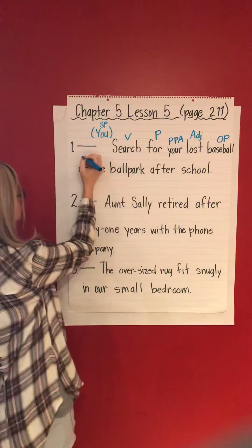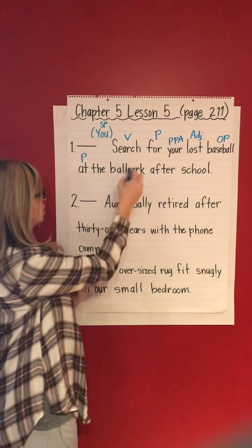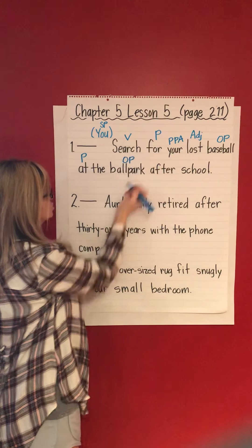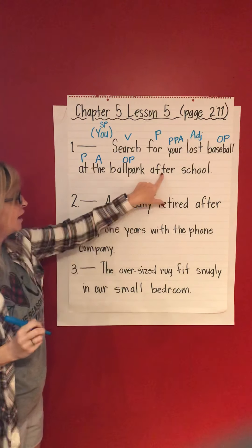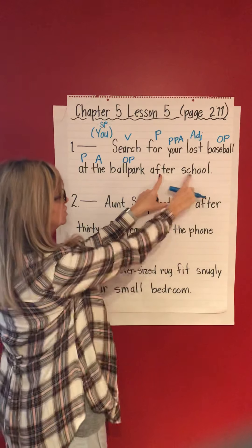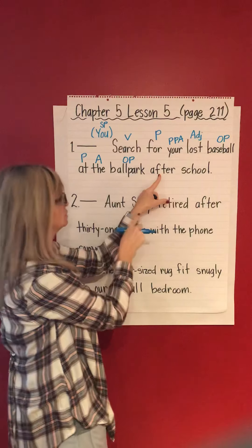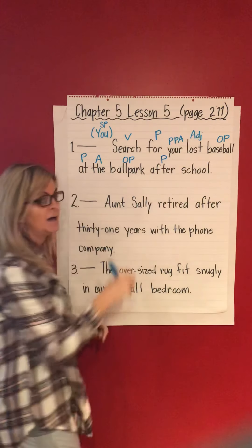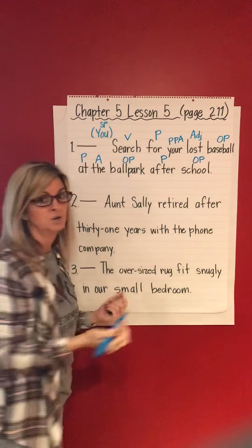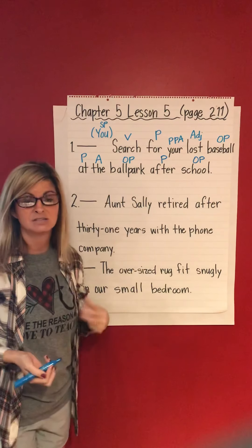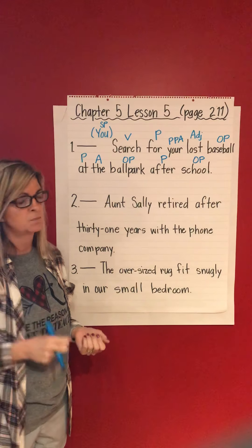'At' — preposition. At what? Ballpark — object of the preposition. 'The' — article adjective. 'After' — and there's a word that comes after this, so we're going to assume that 'after' is a preposition. After what? School — object of the preposition. That verifies that 'after' in this sentence is actually a preposition, because it has an object of the preposition.